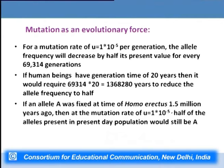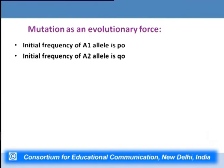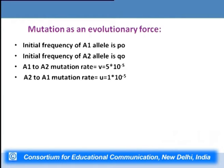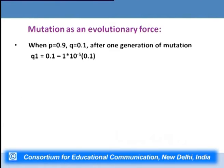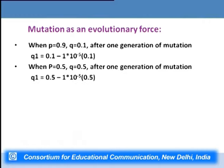If a particular allele A was fixed at the time of Homo erectus 1.5 million years ago, then at this rate half of the alleles in the present human population would still be A — showing mutation is a very slow process. If initial frequency of A₁ is P₀ and A₂ is Q₀ with mutation rates V = 5 × 10⁻⁵ and U = 1 × 10⁻⁵, changes in frequency of A₂ due to one generation of mutation can be calculated using: Q₁ = Q₀ + U·P₀ − V·Q₀.